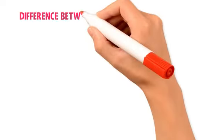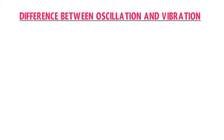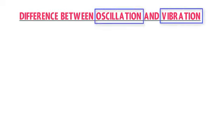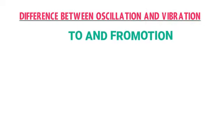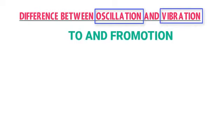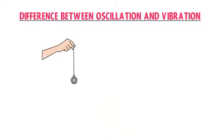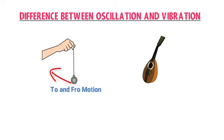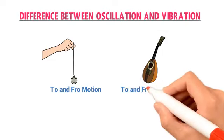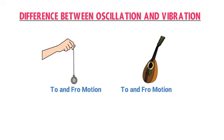Now let me teach you the difference between oscillation and vibration. As we learned, both are to and fro motion, but there is a minor difference — we use the different terms for to and fro motion of different objects. Consider a pendulum and a guitar. When I displace the pendulum from mean position, it starts to and fro motion. When I pluck the string of the guitar, the string also starts to and fro motion. But the to and fro motion of the pendulum is low in frequency compared to the back and forth motion of the guitar string.